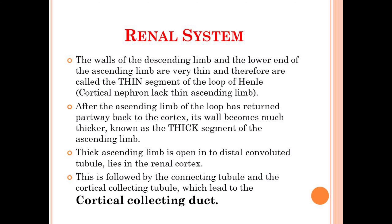The walls of the descending limb and the lower end of the ascending limb are very thin and are therefore known as the thin segments of the loop of Henle. After the ascending limb of the loop has returned partway back to the cortex, its walls become much thicker than the previous portion and are known as the thick segment of the ascending limb.